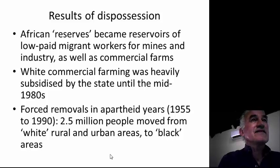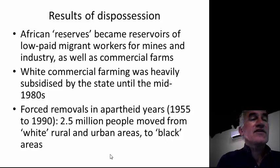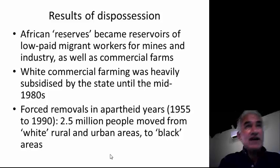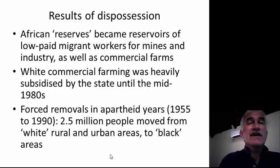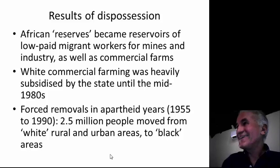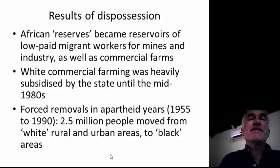What were the results of this dispossession? The so-called reserves, later called Bantustans, became places where low-paid migrant workers kept their families. They went from there to work on mines, industry, and commercial farms. Back home in the reserve, the agricultural production of those left behind — often women — actually helped to subsidise cheap wages on the mines. In other words, the wealth growing up in the formal sector of the economy, dominated by a racial minority, was built directly at the expense of the majority.